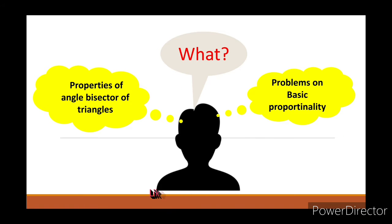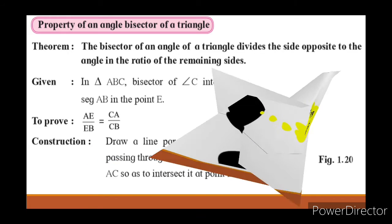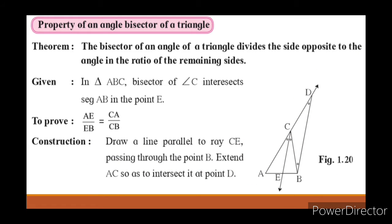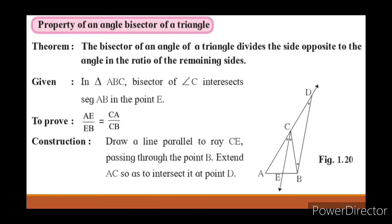Now without wasting time, let's continue our session with properties of angle bisector of triangles. First of all, let's see what the statement says: the bisector of an angle of a triangle divides the opposite side to the angle in the ratio of the remaining sides.